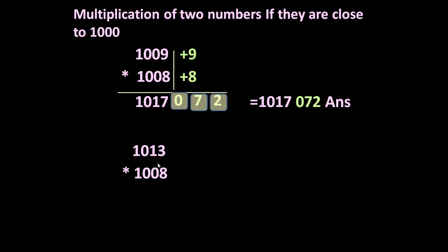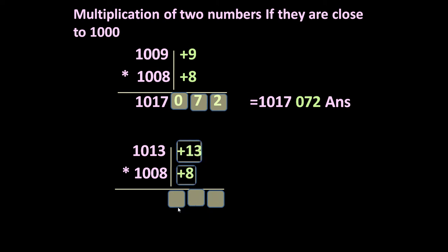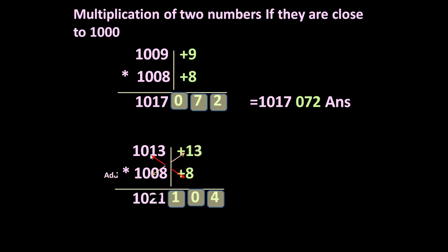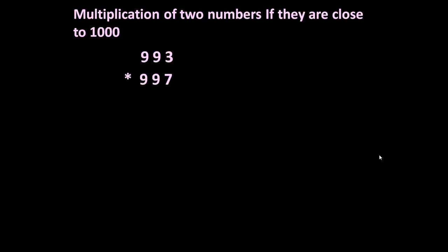Now let us have one more similar problem: 1013 multiplied by 1008. It is 13 more than 1000 and 8 more than 1000. If we multiply these green numbers, we get 104, which fills all three spaces, so no need to add an extra zero. Now doing the cross addition: 1013 plus 8 is 1021, or 1008 plus 13 is 1021. So the answer is 1021 104.